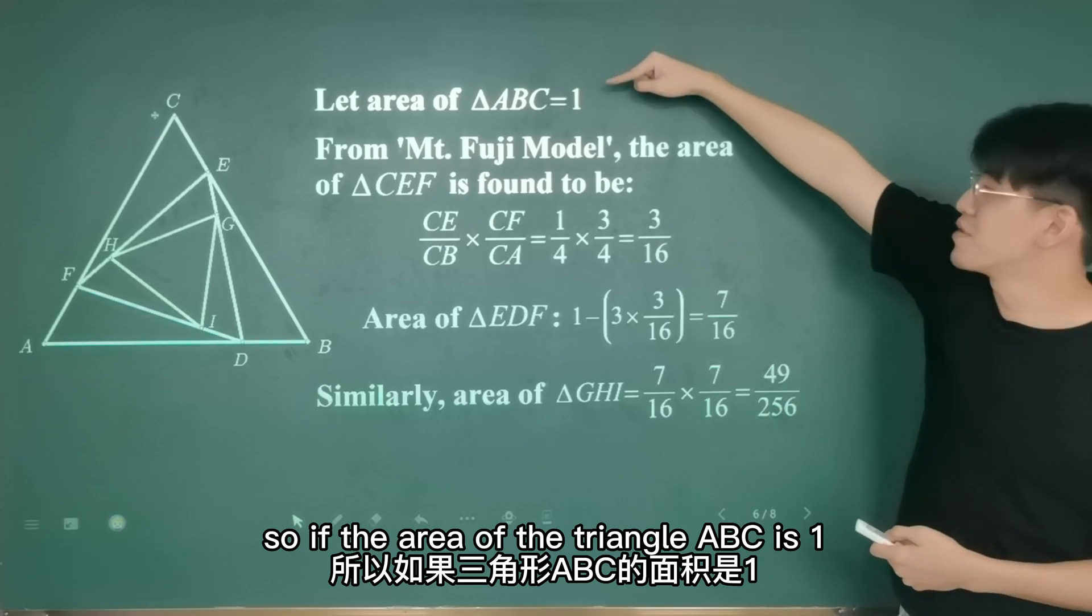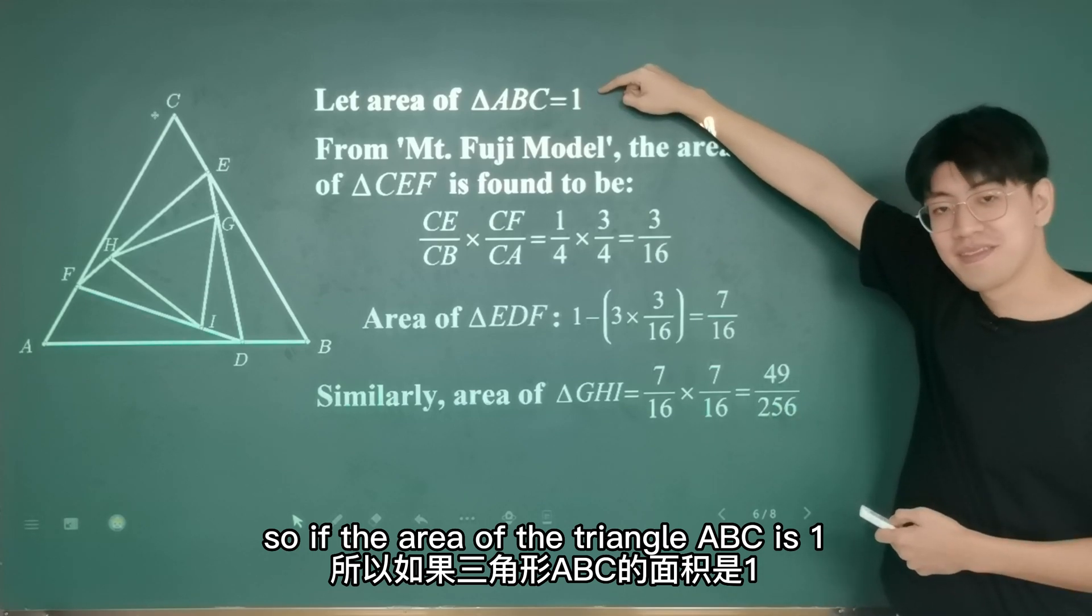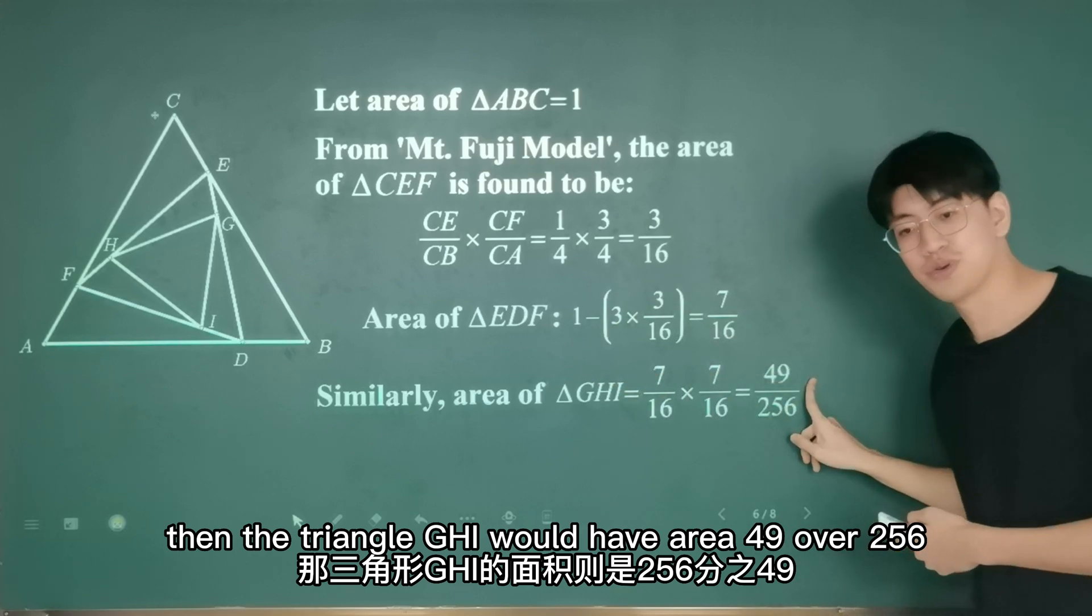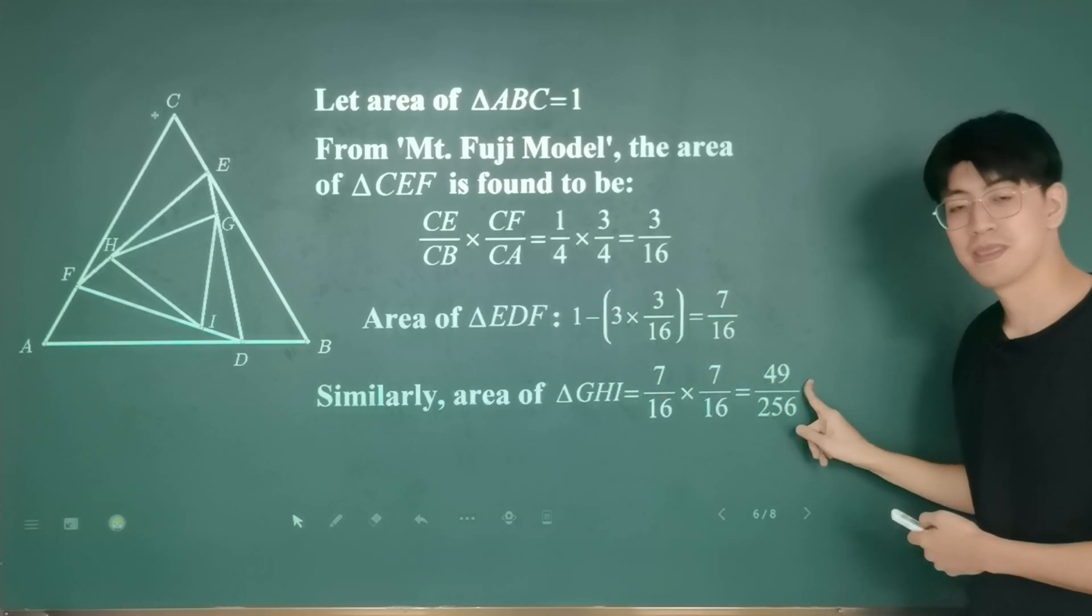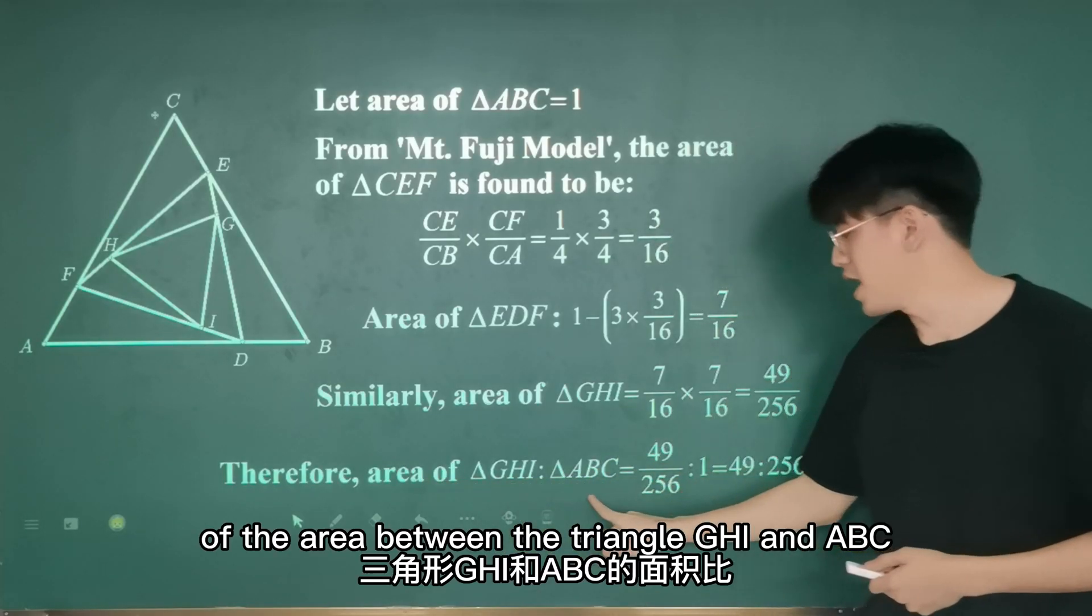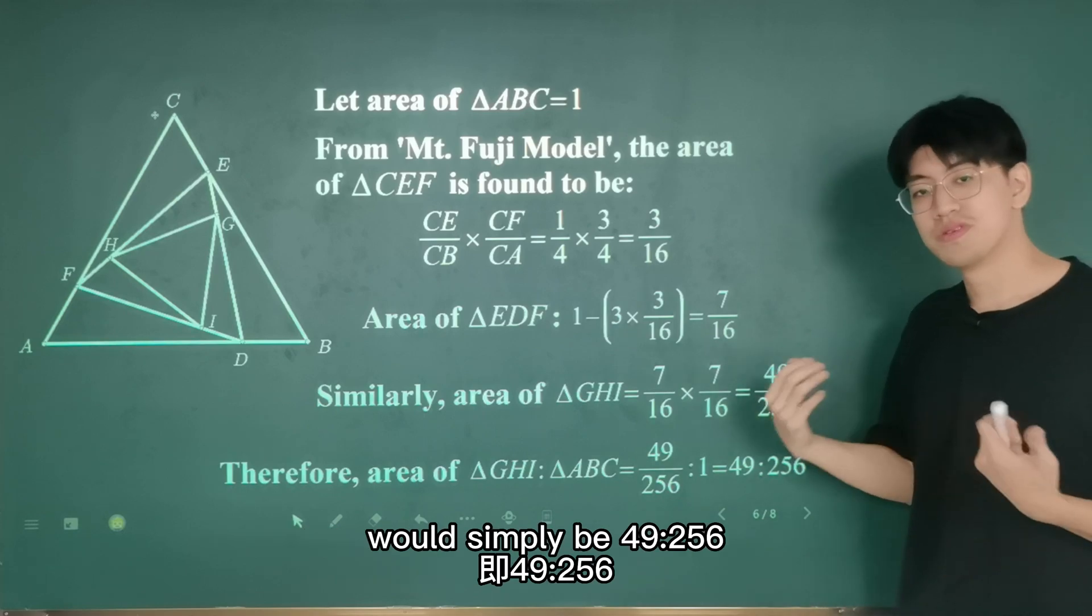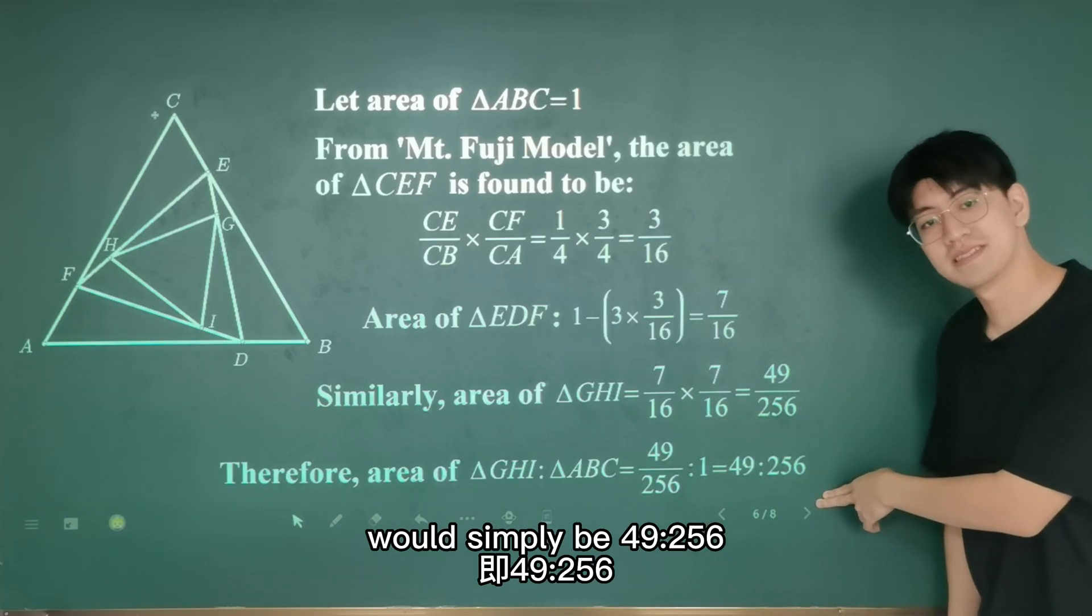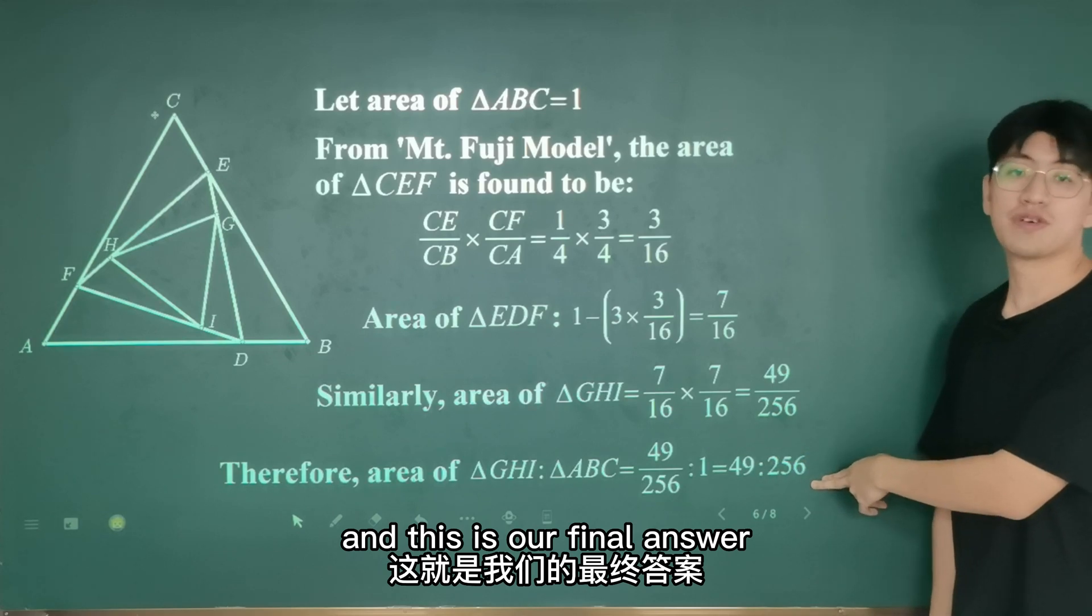So, if the area of triangle ABC is 1, then triangle GHI would have area 49 over 256. Therefore, our final answer, the ratio of the area between triangle GHI and ABC will simply be 49 to 256. And this is our final answer.